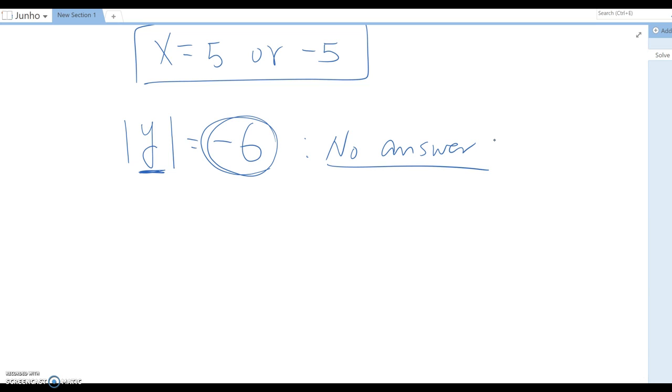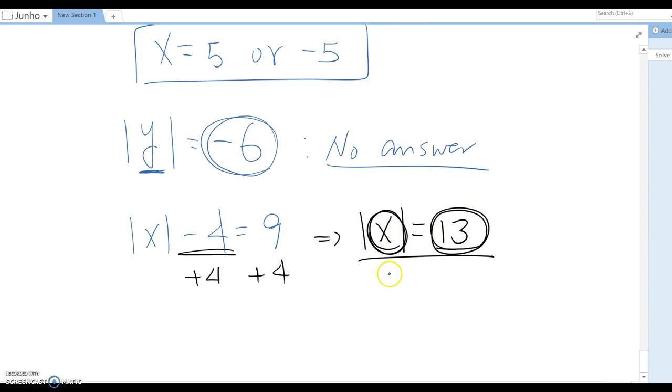Then what about this question? Absolute value of x minus four equal to nine. We need to isolate absolute value alone, and then we solve the problem. We need to remove minus four, so we combine four on both sides. Then this becomes absolute x equal to 13. It means any x value is 13 away from the zero. We know x can be 13 or negative 13.